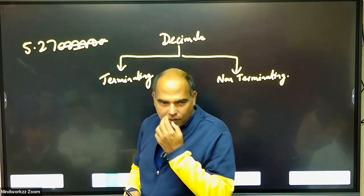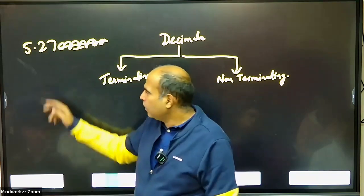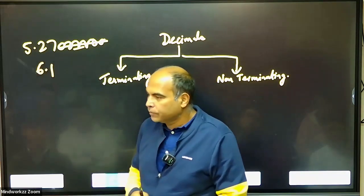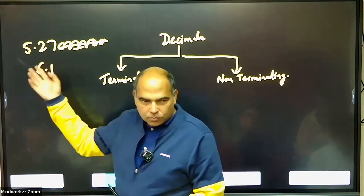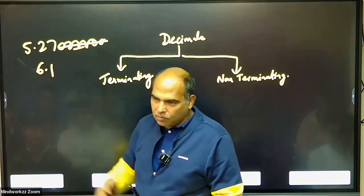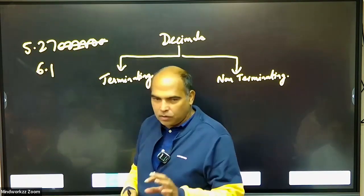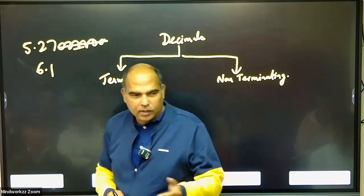So terminating decimal can terminate after one term also—it can be 6.1. It can terminate after two decimals, it can terminate after 100 decimals also. There's no limit; it just has to terminate at some point.